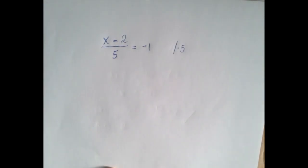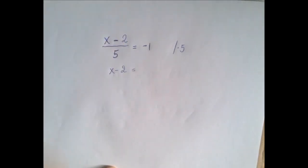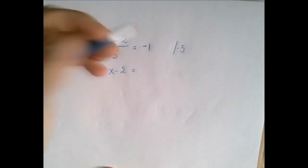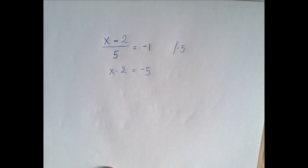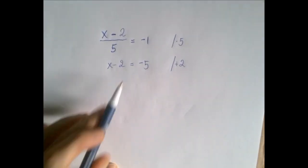When we multiply the left-hand side by 5, we're going to undo this division, so we're just left with x minus 2, that's why we did it, and 5 times negative 1 is negative 5. Now we're going to add 2 to both sides to undo this subtraction.